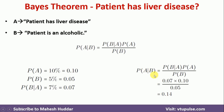We have been given three pieces of information, and using that we found the probability that the person is having liver disease given he is alcoholic, which is equivalent to 14%.